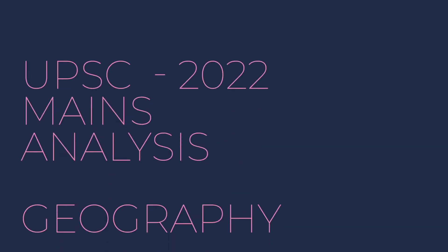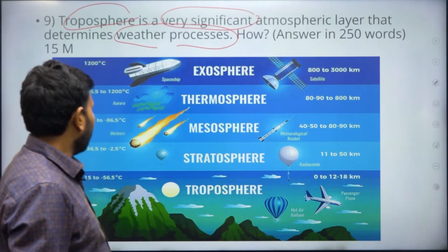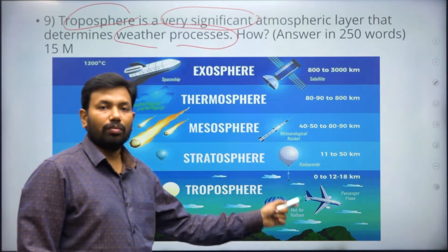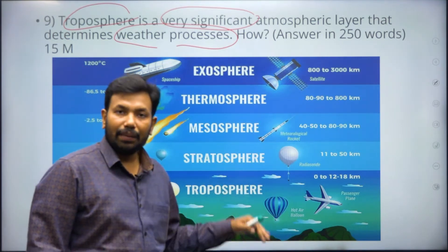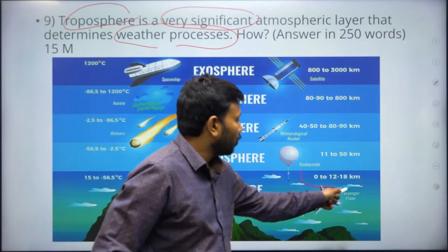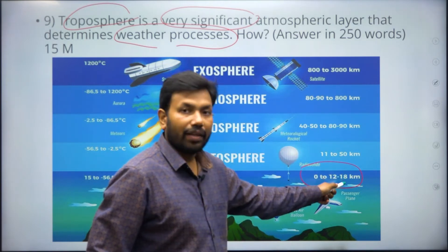All life exists here - all the mountains, plateaus, plains, valleys, and seabed, everything lies in the troposphere. All life exists from 0 to 12 to 18 kilometers. At the poles it is 12 kilometers and at the equator it is 18 kilometers.